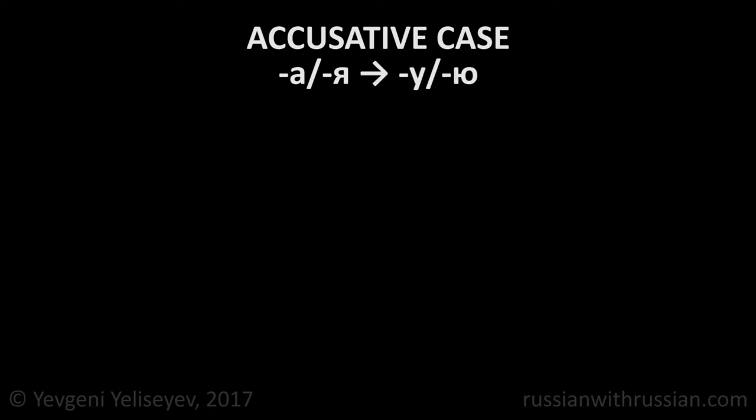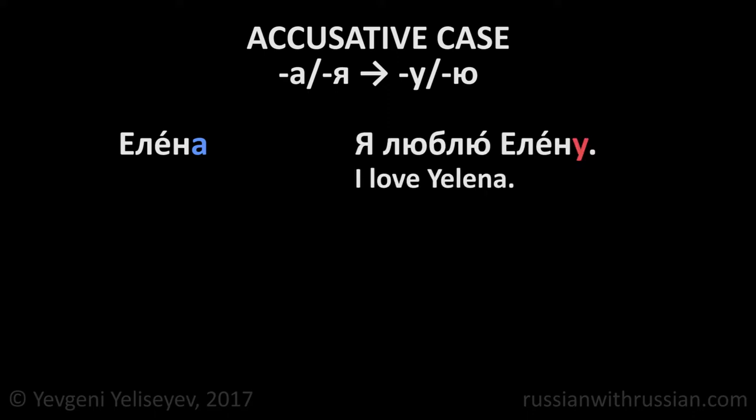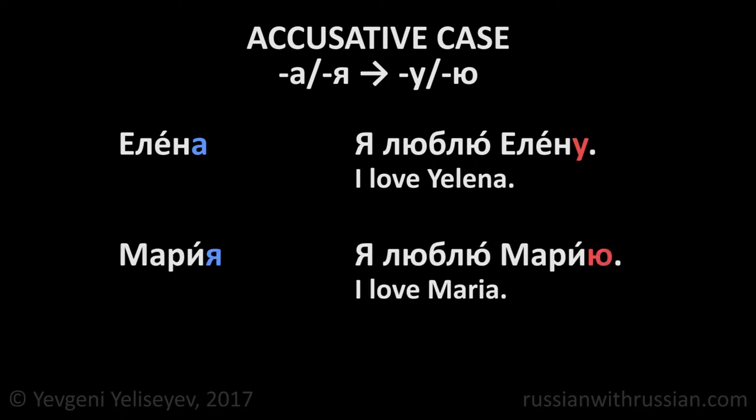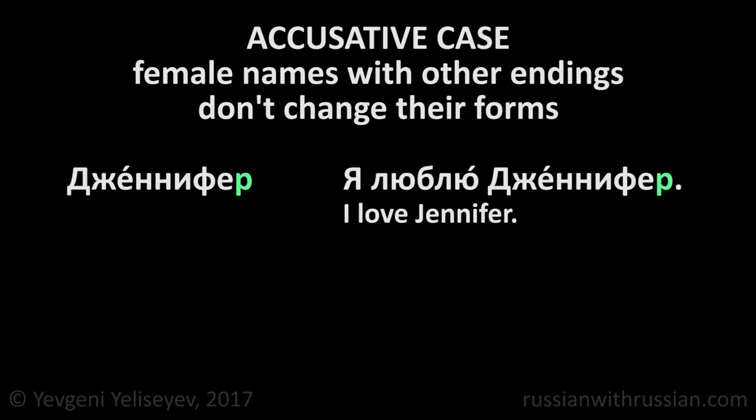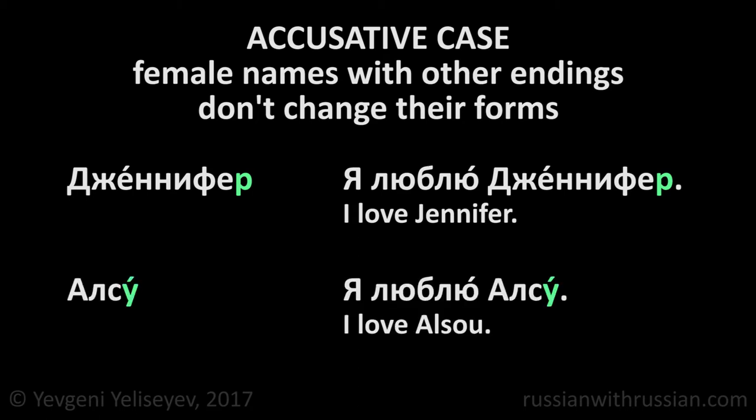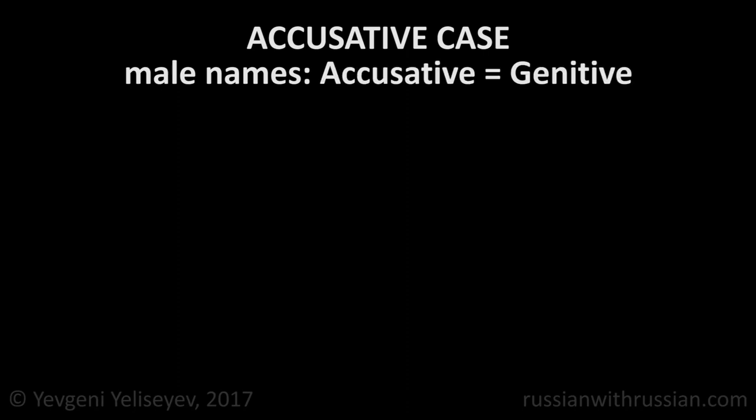To indicate the person we love, we should put their name in the accusative form. To do it, we must change its ending in accordance with the following rule. If the person's name ends in А or Я, we replace them with У and Ю respectively: Елена → я люблю Елену — I love Elena; Мария → я люблю Марию — I love Maria. But female names ending in letters different from А or Я don't change their forms: Дженнифер → я люблю Дженнифер — I love Jennifer; Алсу → я люблю Алсу — I love Alsu.